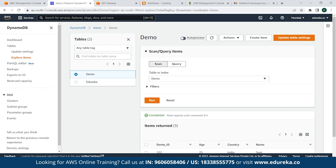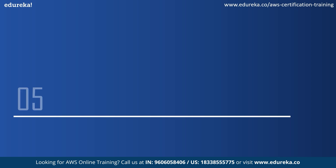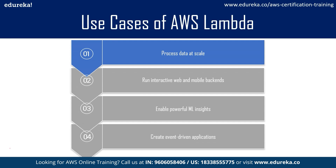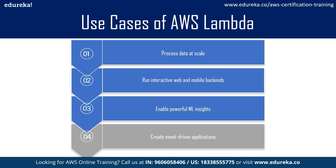You can see how simple it is to create a serverless API using AWS Lambda. This was all for today's demo. Now coming to the last topic: AWS Lambda use cases. The first use case is processing data at scale — AWS Lambda executes code at the capacity you need, scaling to match your data volume. The second use case is running interactive web and mobile backends, combining AWS services to create secure, stable, and scalable online experiences. The third use case is enabling powerful ML insights by pre-processing data before feeding it to your machine learning model using Amazon Elastic File System. The fourth use case is creating event-driven applications — AWS Lambda reduces cost by running applications during peak demand without crashing, thanks to its built-in fault tolerance.